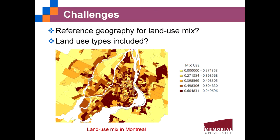We faced some challenges worth mentioning. The first challenge is related to the calculation of land use mix. Currently, we assume that land use is best mixed when the percentage of each land use type is equal, but this is theoretically problematic. For example, based on the entropy index we use now, the airport area in Montreal has a higher land use mix than some downtown areas, probably because those downtown areas do not have some land use types such as industrial. This raises questions about whether we need a reference geography and what land use types should be included.